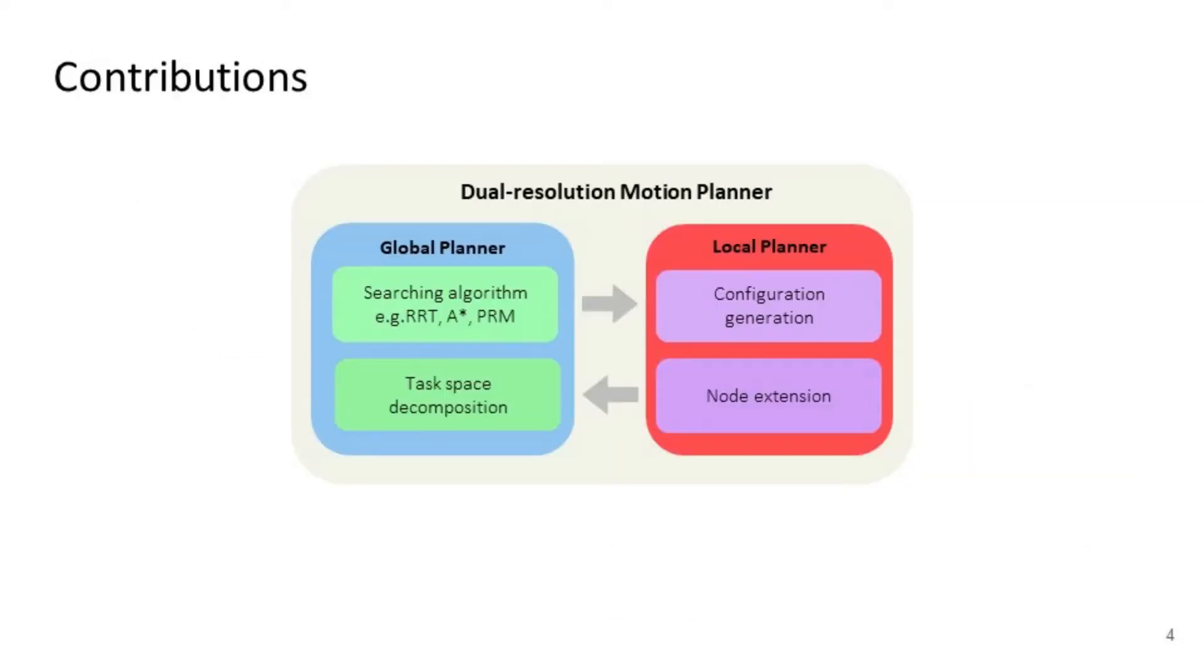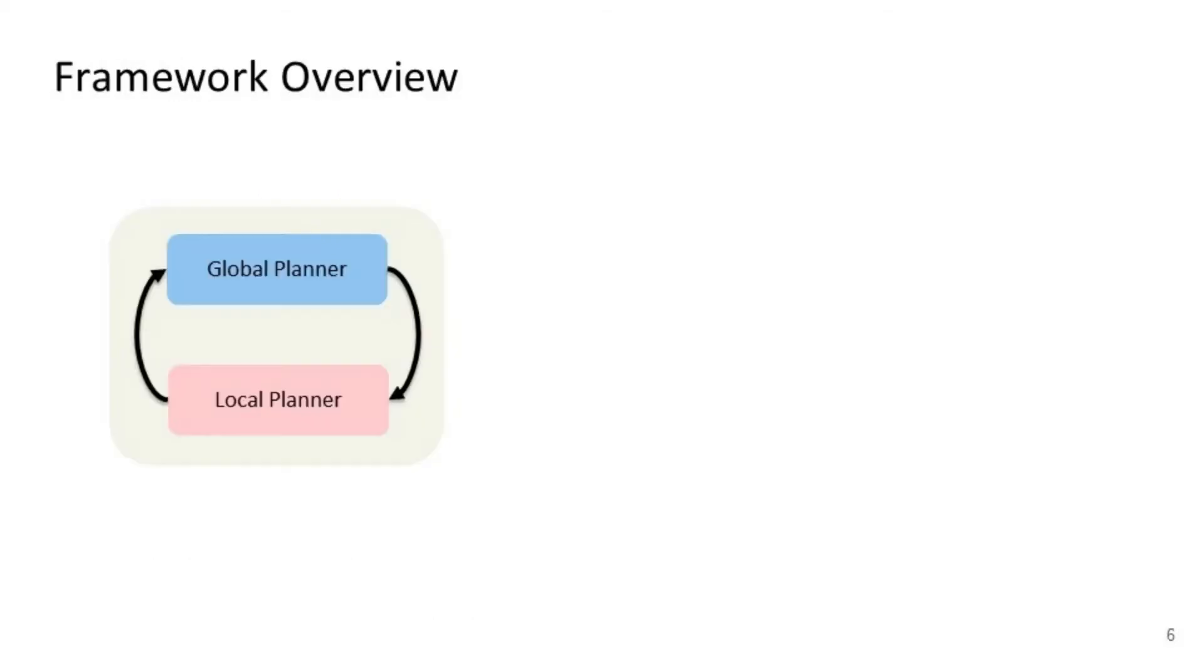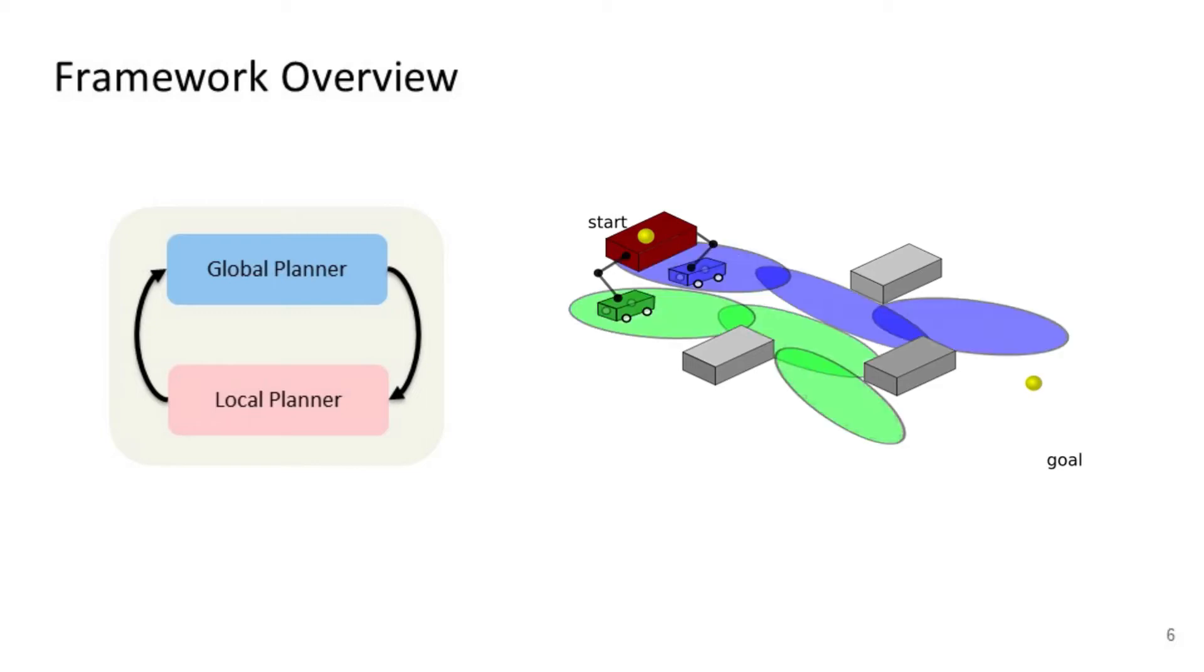To address these challenges, we propose a dual-resolution motion planning framework consisting of two planners with different planning spaces. Each component is primarily responsible for different challenges. As shown in the animation, we have a low-resolution global planner expressed in lower-dimensional decomposed task space regions from start to goal,